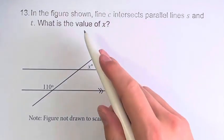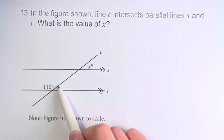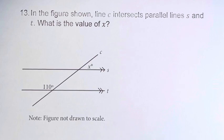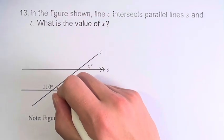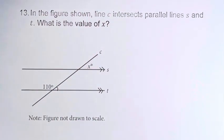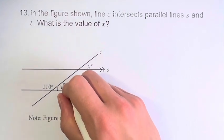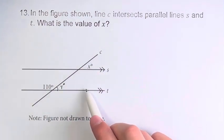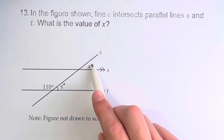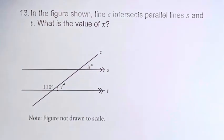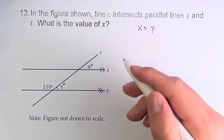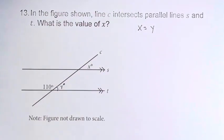And we're asked, given that this angle is 110 degrees, what is the value of X? So we're going to do this in two steps here. First, we're going to find this angle — let's call this Y degrees. Note that since these two lines are parallel, Y and X are corresponding angles. Therefore, X is equal to Y. If we find Y, we find X.